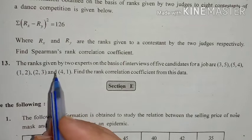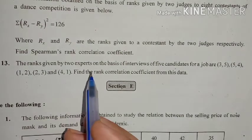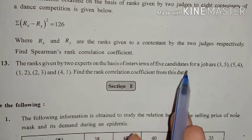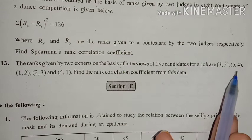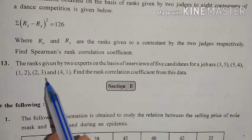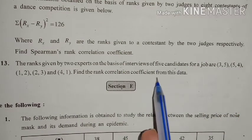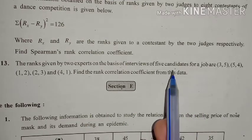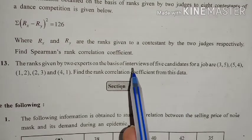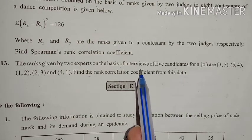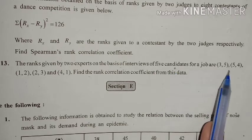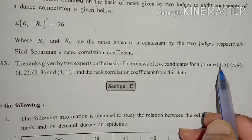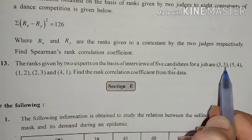The ranks given by two experts on the basis of interviews of five candidates for a job are (3,5), (5,4), (1,2), (2,3), and (4,1). Find the rank correlation coefficient from this data. Here in the question, we have five candidates and two interviewers who gave ranks to the five candidates. First candidate: first interviewer and second interviewer.